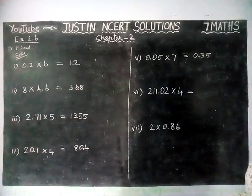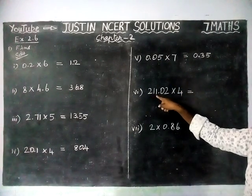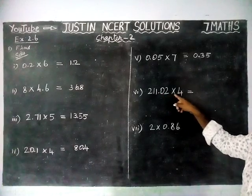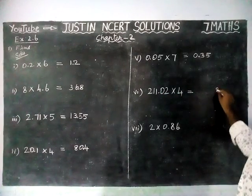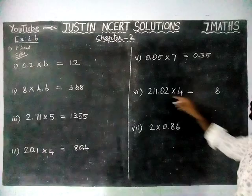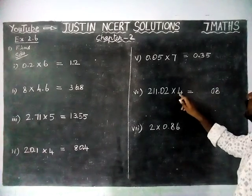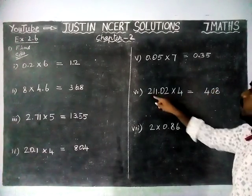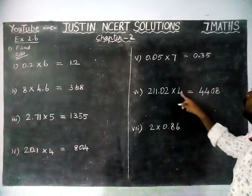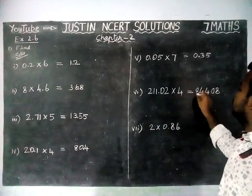And sixth question, 211.02 into 4. We have to multiply the numbers. 2 times 4 is 8. 4 into 0 is equal to 0. 4 times 1 is 4. 4 times 1 is 4. Now 4 times 2 is 8.